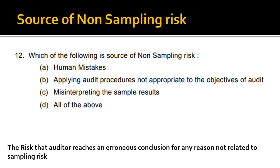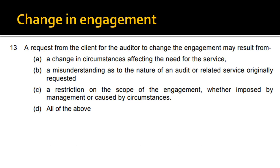Next: what are the sources of non-sampling risk? Non-sampling risks are risks that the auditor reaches incorrect conclusions for any reason not related to sampling risk. These include human mistakes, applying audit procedures not appropriate for the objective of the audit, and misinterpretation of sampling results. Therefore, all of the above is the correct answer.